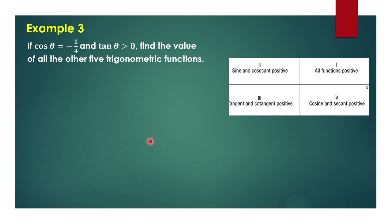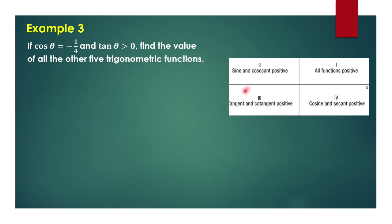For example 3, let's say cosine of theta is negative 1 fourth and tangent is greater than 0. We need to find the value of the other five trigonometric functions. Since tangent is greater than 0, tangent theta is positive, which means the angle is in the first or third quadrant. But since cosine theta is negative, the angle must be in the third quadrant, where only tangent and cotangent are positive.